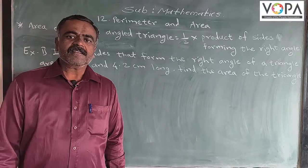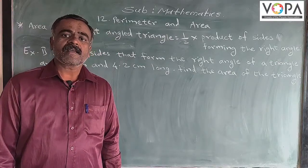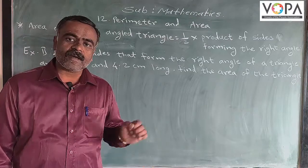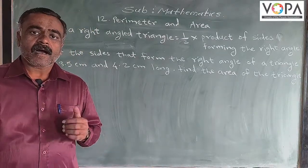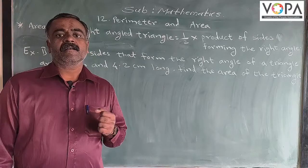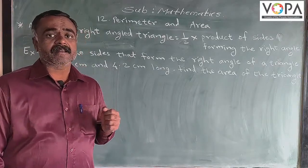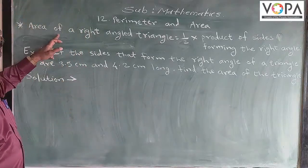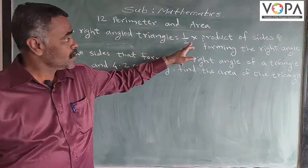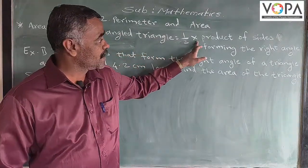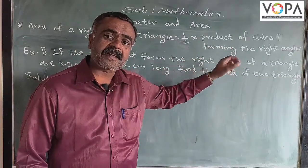Hello students. In the previous part we learnt how the area of a square and area of a rectangle are calculated. Our next topic is area of a right angle triangle. The formula is: area of a right angle triangle is equal to one half into product of sides forming the right angle.